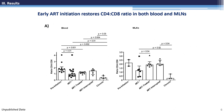CD4/CD8 ratio is widely used by clinicians as a clinical marker of disease progression during HIV infection. Here, we observe a decrease in the CD4/CD8 ratio in both blood and mesenteric lymph nodes of untreated animals that was restored after early ART initiation. Of note, ART interruption did not affect the CD4/CD8 ratio.